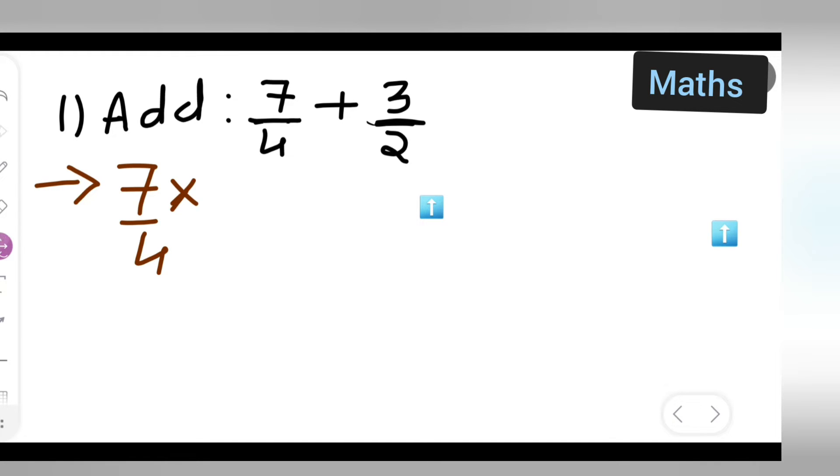It's like cross multiplication. You are multiplying this 2 with this 7 upon 4, both numerator as well as denominator. Then put a plus sign. Write down 3 upon 2. Now I am multiplying 4 with this 3 upon 2. It's like cross multiplication. So write down 4 upon 4 so that we should get the same denominator.